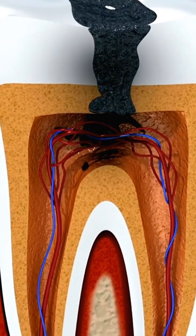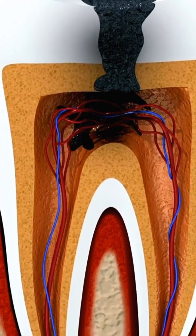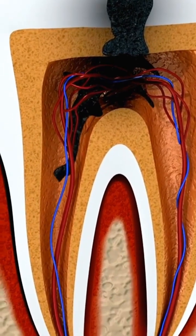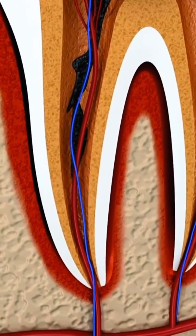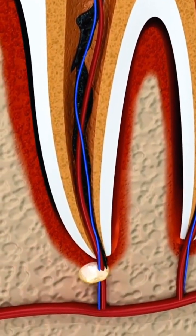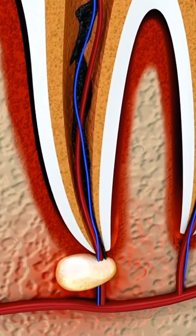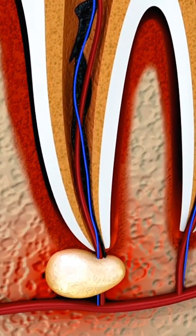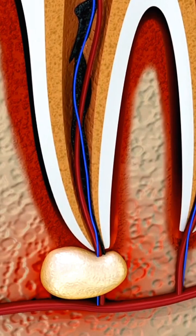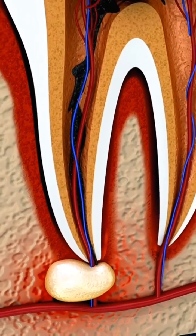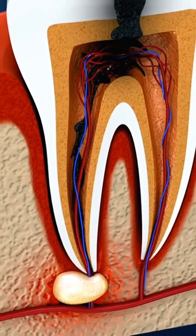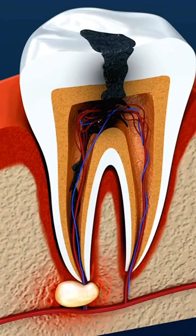An infected root canal occurs when germs in the mouth infiltrate the tooth pulp, which can arise as a result of a cracked or chipped tooth, a broken tooth root, damage to the tooth pulp with or without damage to the tooth surface, or dental procedures that are repeated.